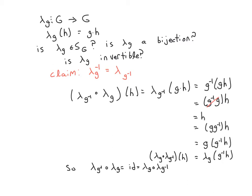Which means that, yes, lambda sub G is invertible. Yes, it is a bijection. Yes, it's in SG. I actually do, in fact, have a permutation.